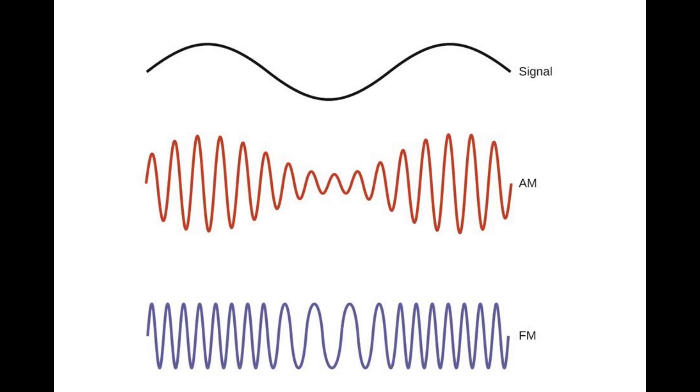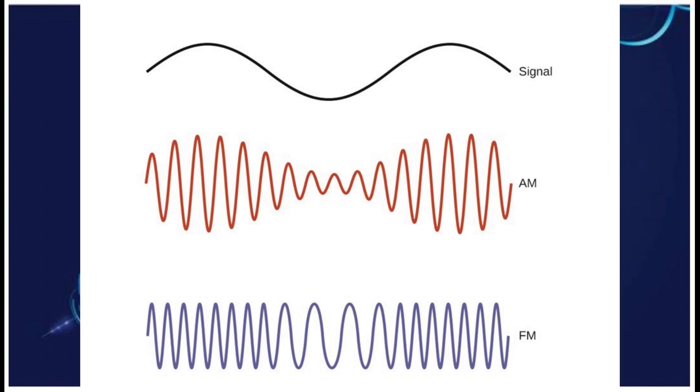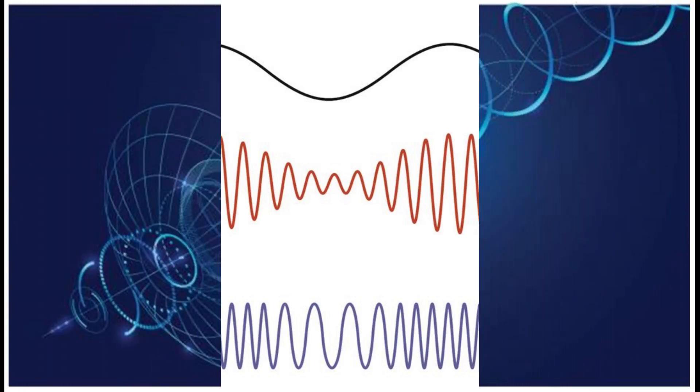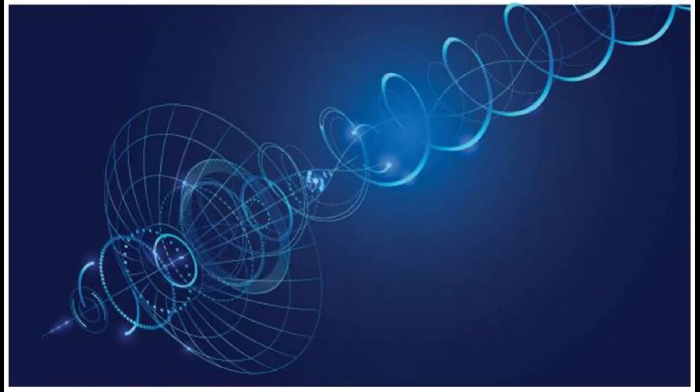Radio waves are generated artificially by an electronic device called a transmitter, which is connected to an antenna which radiates the waves. They are received by another antenna connected to a radio receiver. Radio waves are very widely used for fixed and mobile radio communication, broadcasting, radar and radio navigation systems, communication satellites, wireless computer networks and many other applications.